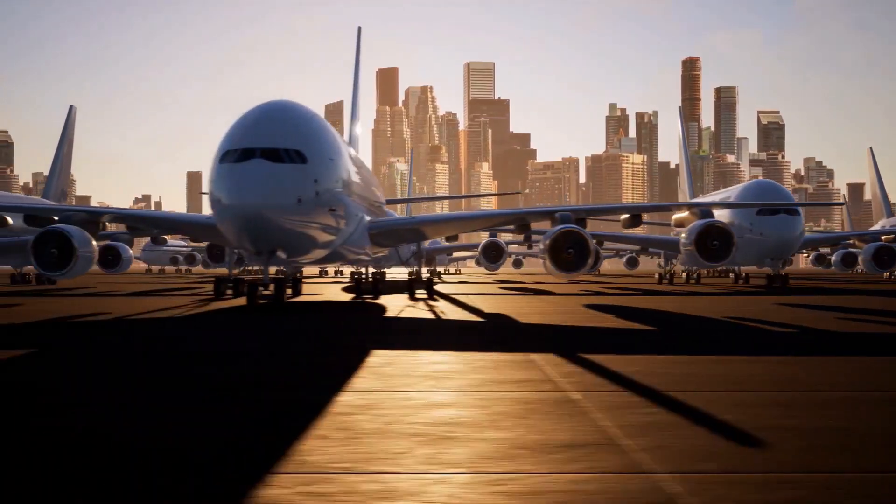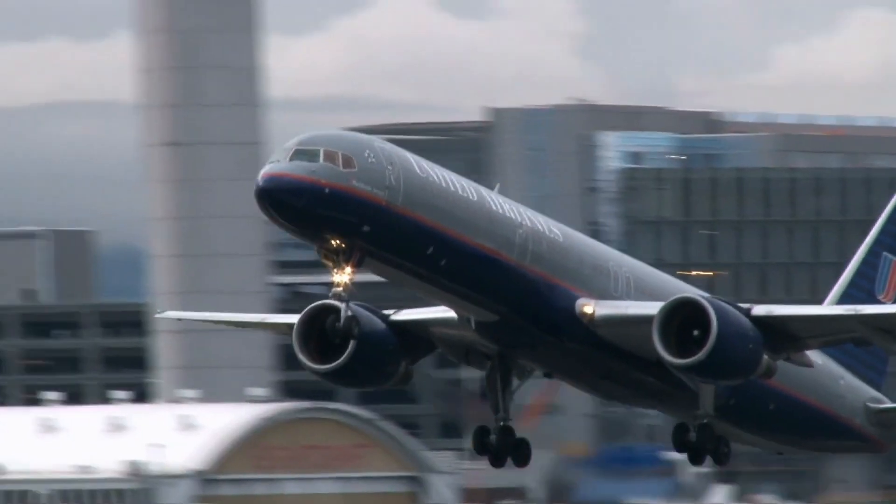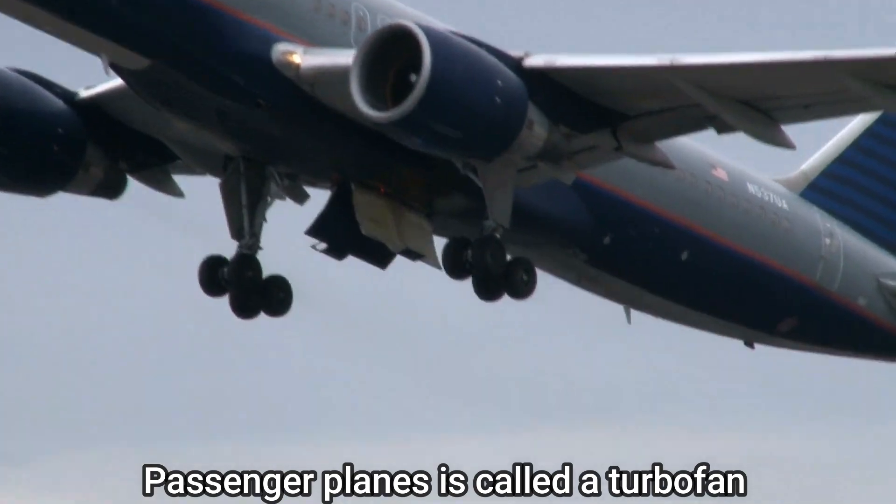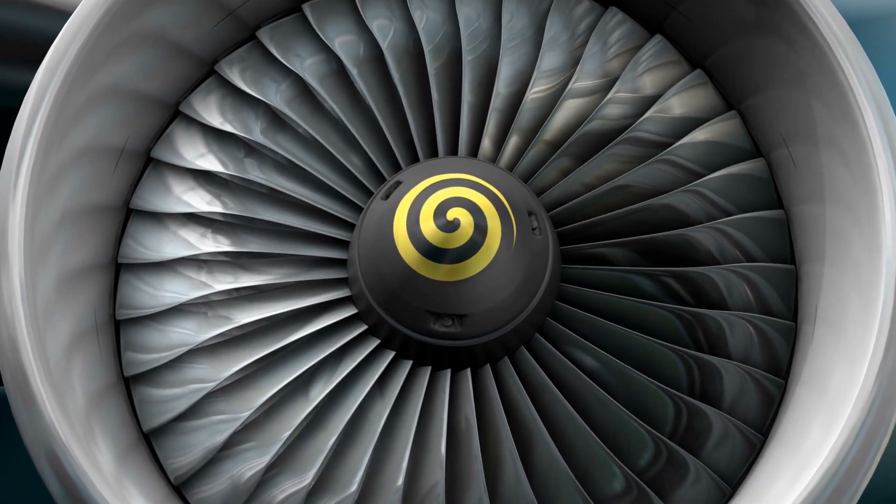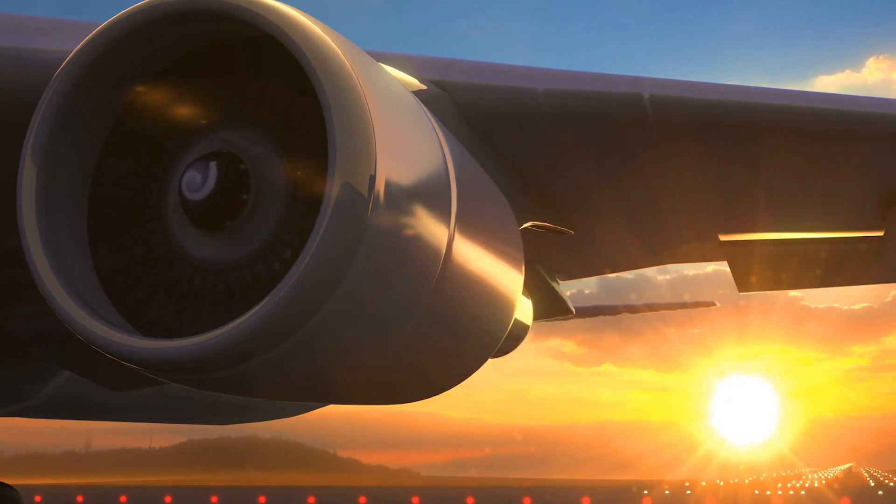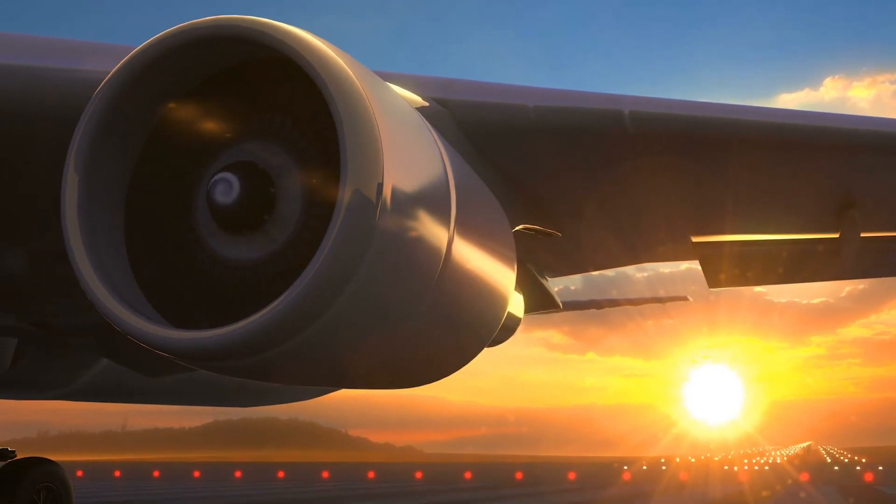There are many different variations on the jet engine, but the most commonly used in passenger planes is called a turbofan because it contains a turbine and a fan. So what exactly is a jet engine and how does it work?